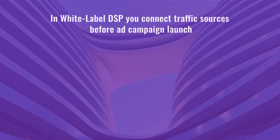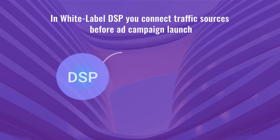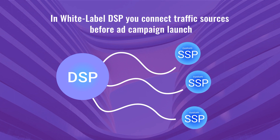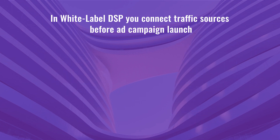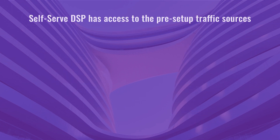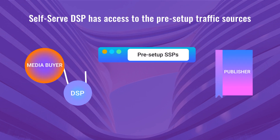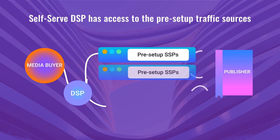One more thing to know before starting your own DSP: programmatic media buying with your own DSP means you will not only plug in your demand, but also connect your own traffic sources — for example, supply-side platforms, ad exchanges, websites, or mobile apps. If you don't have time to negotiate with publishers, just look for a self-serve DSP that already has access to trusted traffic sources.